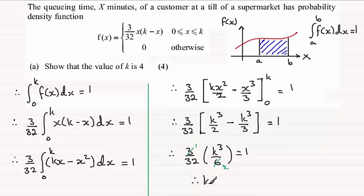Multiply both sides by 64, and you've got k cubed equals 64. And if you take the cube root of 64, then k is equal to 4. And that's what we had to show. Okay?